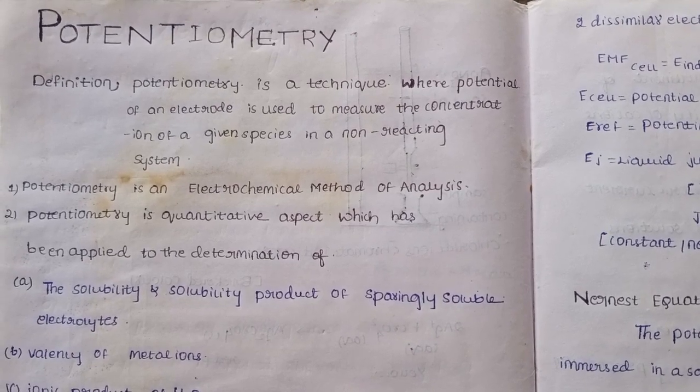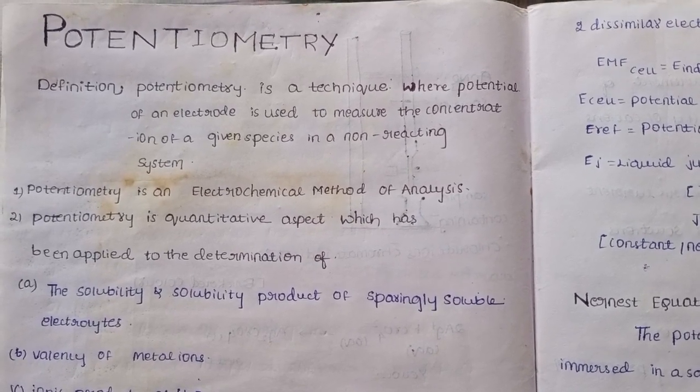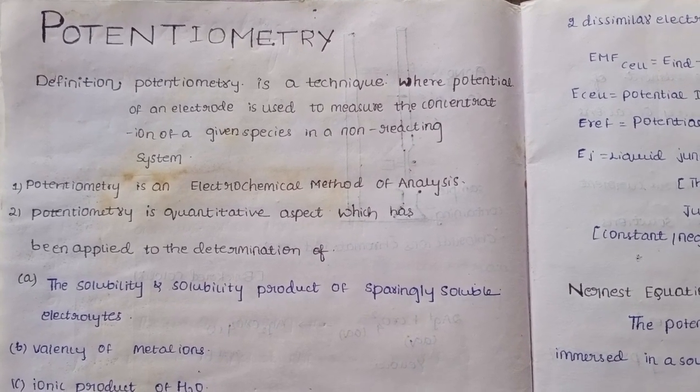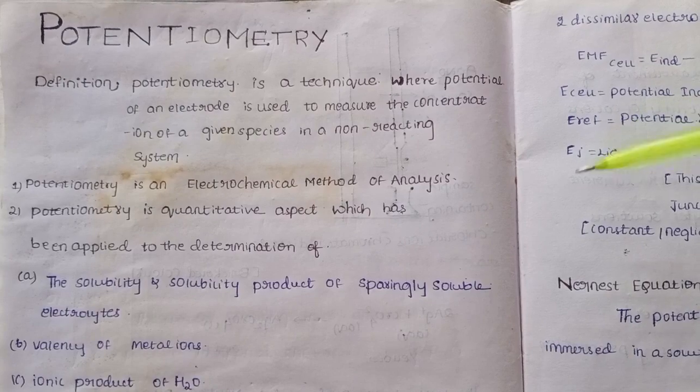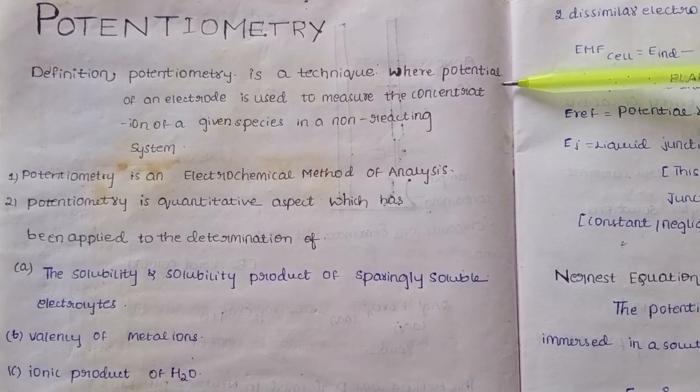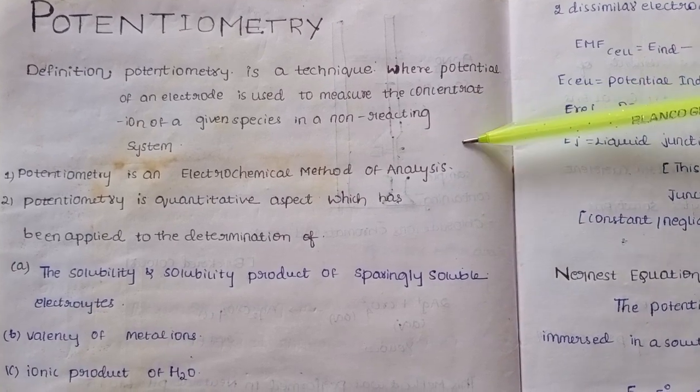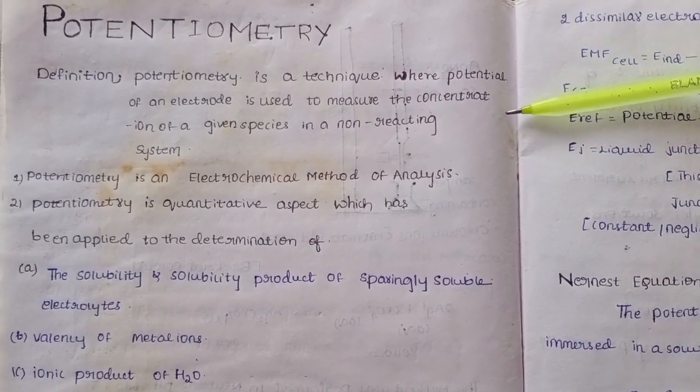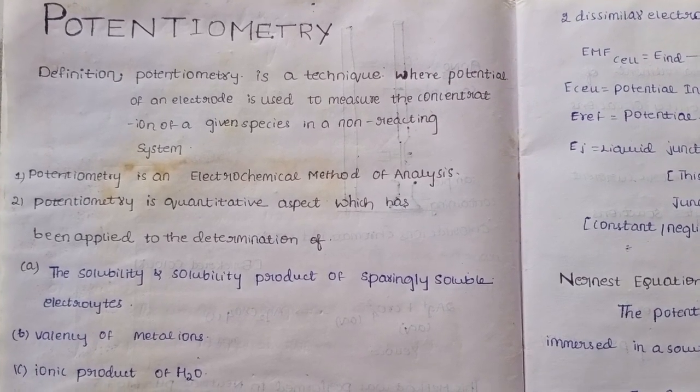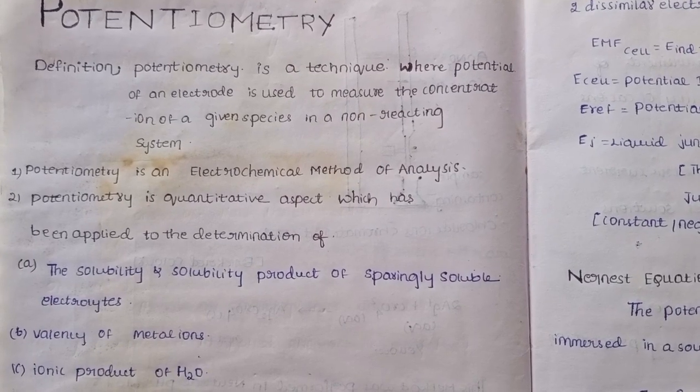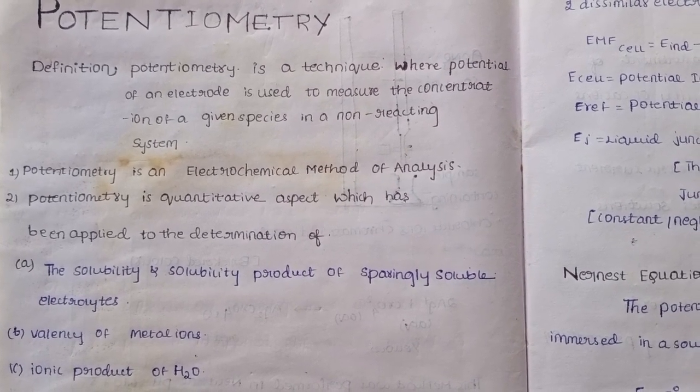I have already explained potentiometric indicators and how the potentiometric titrations have been done. Here I want to explain the introduction and what are the main terminologies. Definition: potentiometry is a technique where potential of an electrode is used to measure the concentration of given species in a non-reacting system.